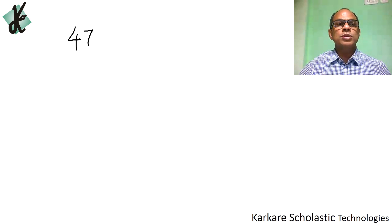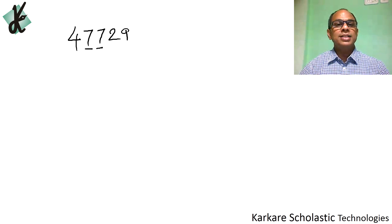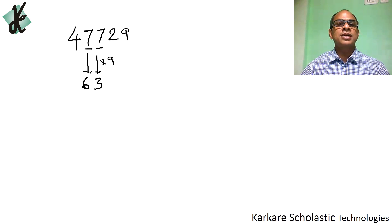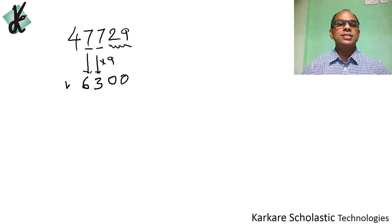Continuing with how to find the difference between place values — take 47729. What is the difference between the place values of the two 7s? Since the digits are the same, the difference is a multiple of 9: 9 × 7 = 63. There are two digits after the second 7, so we put two zeros, giving an answer of 6300.